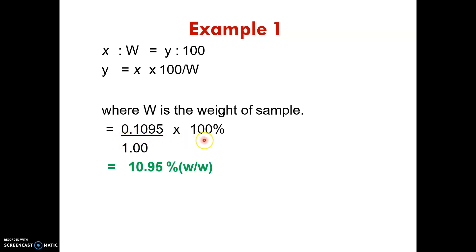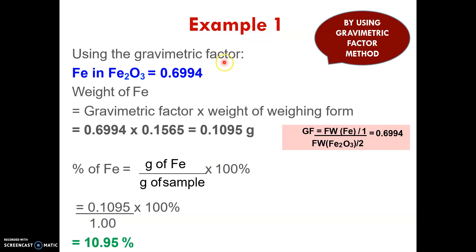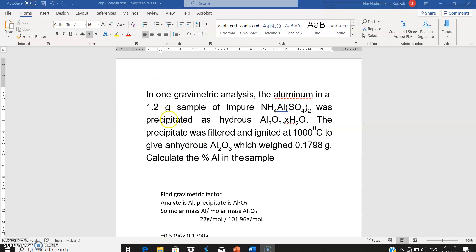Multiplying by 100 gives you the final answer. Now using the gravimetric factor method for the same question: first calculate the GF value - molar mass of iron divided by molar mass of Fe₂O₃, multiplied by two. Then multiply the GF by the weight of the precipitate to get the mass of the analyte. Dividing by the sample mass of one gram times 100 gives the same answer: 10.95 percent.